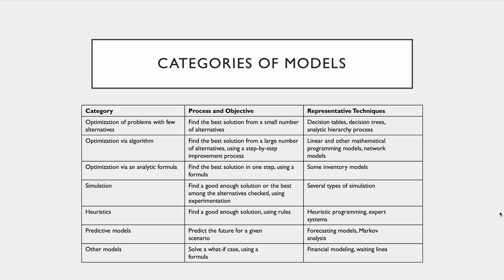There are a couple of categories of models here that you need to pay attention to. What we're going to be doing throughout this class is a little bit of optimization and prescription based on some input scenarios — more of the heuristics approach, finding the best possible solution using some set of rules. It's also a bit of simulation, coming up with the best possible solution amongst all presented items using an experiment that we'll have the computer run for us.